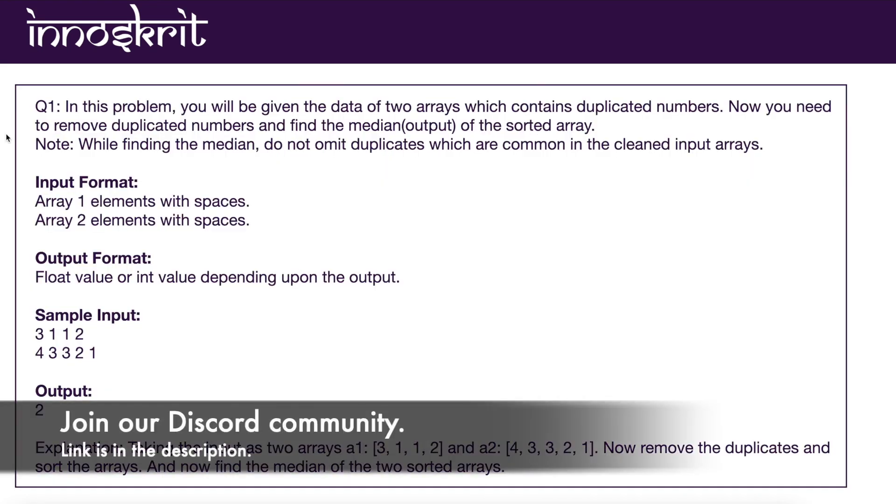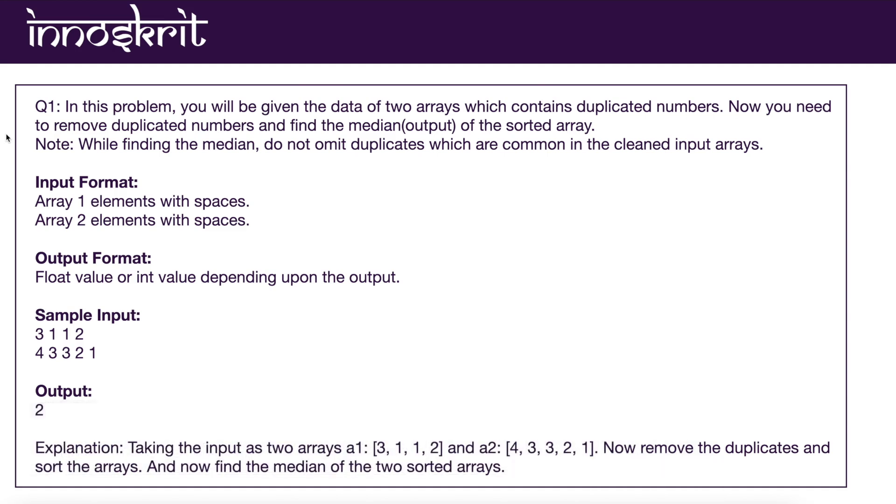In this problem, you will be given the data of two arrays which contains duplicated numbers. Now what we have to do is we have to remove the duplicated numbers and find the median of the sorted array. The input format is array one elements with spaces, array two elements with spaces. In the output you have to return the median, which can be an integer or float value.